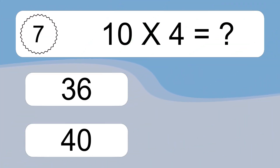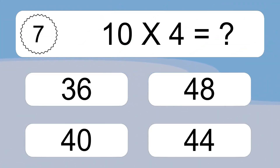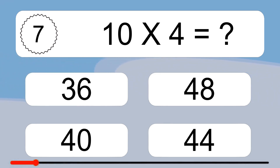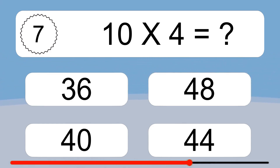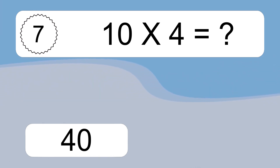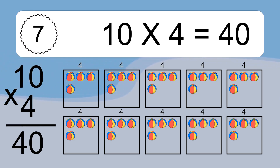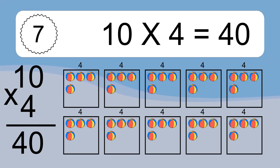Ten times four equals what? We have ten boxes, and each box has four colorful balls inside. If you count all the balls in all the boxes together, you will have ten times four balls. This equals forty balls.